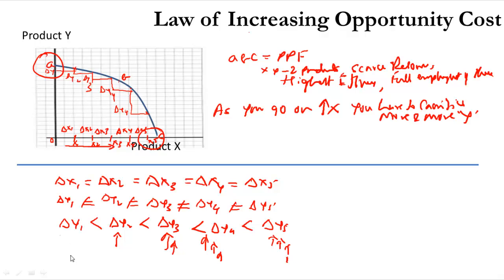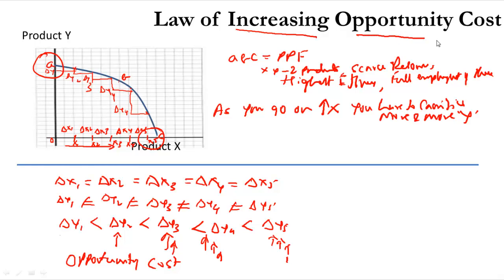Which means the opportunity cost — another term for the sacrifice of some benefit — increases from X1 to X5. In other words, as you go on increasing X, you have to sacrifice more and more of Y. This is the meaning of the law of increasing opportunity cost.